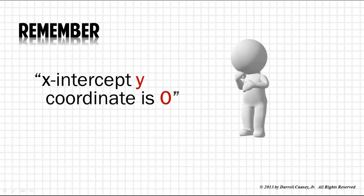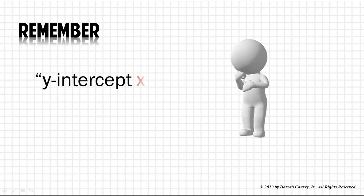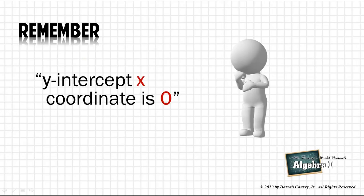Now what's really important about this whole thing is that you realize that our x-intercept always has a y-coordinate of 0, and the y-intercept always has an x-coordinate of 0.